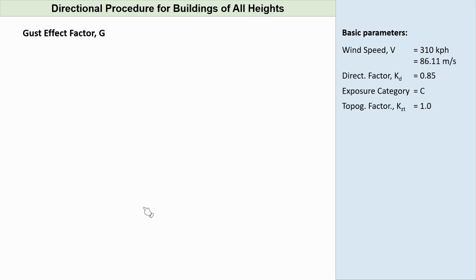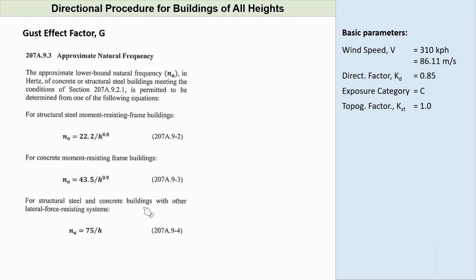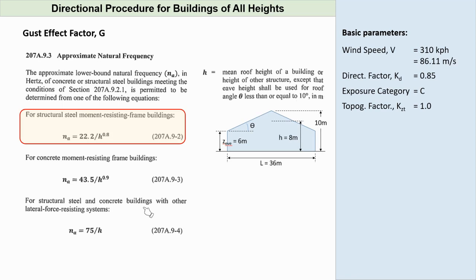The gust effect factor. According to the code, gust effect factor for a rigid building or other structure is permitted to be taken as 0.85. In order to determine whether the structure is rigid or flexible, we have to know first its natural frequency. Flexible structures are usually slender structures having a fundamental natural frequency less than 1 Hz. The code also provides an approximate calculation of natural frequency which is a function of the structure's height. For wind direction normal to ridge, we will use the formula for steel moment-resisting frame buildings, since our MWFRS in this direction is a portal frame. The natural frequency can now be taken equal to 22.2 divided by H raised to 0.8. H is the mean roof height of the building, except that eave height shall be used for roof angle less than or equal to 10 degrees.